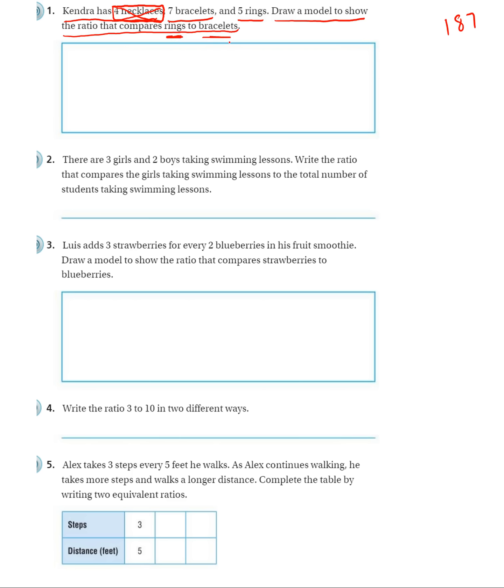What they want us to do is compare rings and bracelets. And notice it does mention the rings first. So we want to draw the rings on top or first. So let's draw a model. I'm going to have five rings.